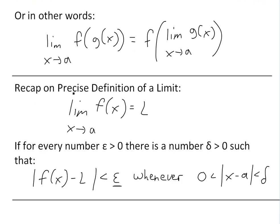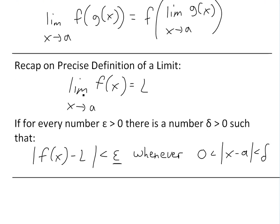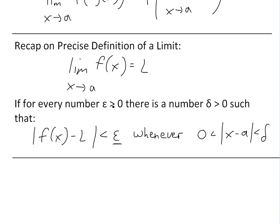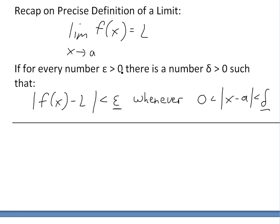Before I get to the proof, I want to quickly recap the precise definition of a limit: the limit as x approaches a of f equals L if for every number epsilon greater than zero, there exists a number delta greater than zero, dependent on epsilon, such that the absolute value of f(x) minus L is less than epsilon whenever zero is less than the absolute value of x minus a and less than delta. You can see the video on the precise definition of a limit below, because once you get it, all these proofs become pretty straightforward.